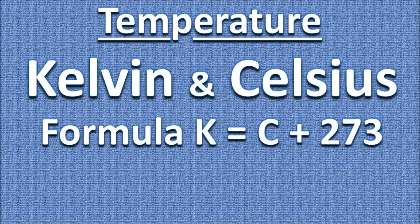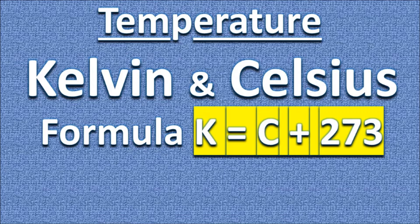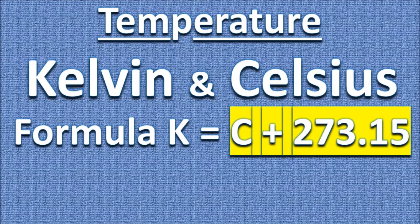So here's our formula: K equals C plus 273. Now today this is an approximation. My later textbook had it as 273.15.